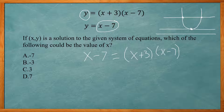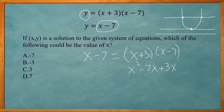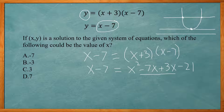Instead, I'm going to FOIL the right side: x times x gives x², x times −7 gives −7x, 3 times x gives 3x, and 3 times −7 gives −21. The left side stays x − 7. On the right side I can combine like terms: −7x + 3x = −4x, giving me x² − 4x − 21.